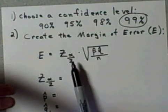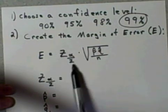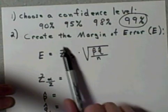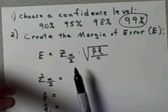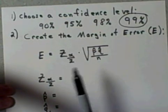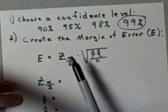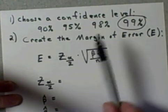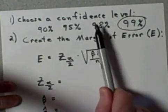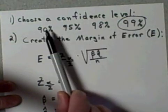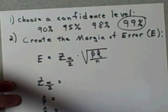It's equal to z sub alpha over two, and this all in itself is just a name for what we call a critical value. Please recall that these critical values come directly from which of these four confidence levels we chose.